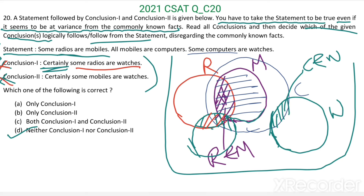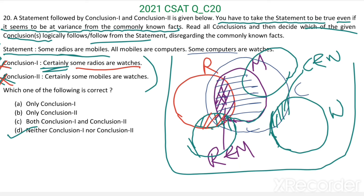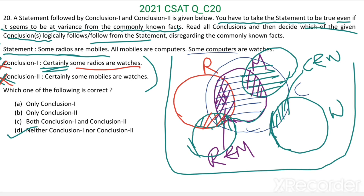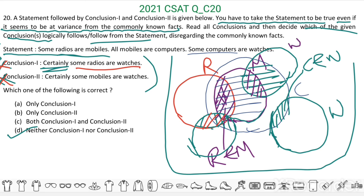Similarly for the second conclusion — suppose we draw the circle for watches in this way, some computers are watches, and here we can say some mobiles are watches. So some mobiles are watches is true in one case, but it is only a possibility, it is not certain. Therefore, the second conclusion also is not following. Therefore, our answer is option D: neither conclusion 1 nor conclusion 2 follows the given statement.